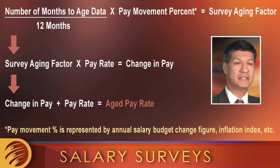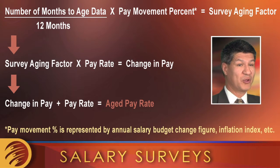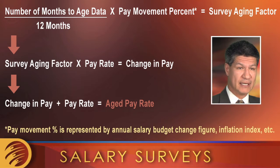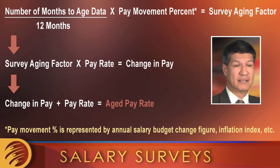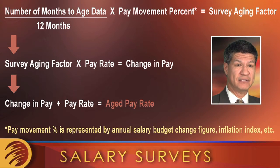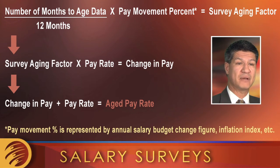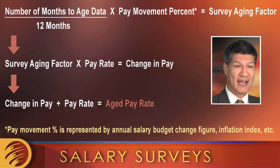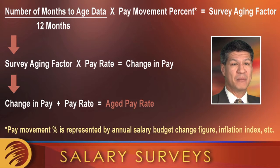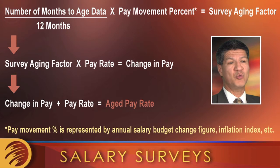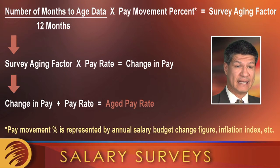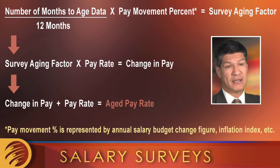That is a problem — it's just the nature of the beast. So what we do as compensation professionals is a simple technique called aging the data, where we determine based on other surveys — World at Work's salary budget survey being one good source — how fast the market is moving in general. Is that two percent? Is that three percent? We take that aging factor and apply it to forward the past data to today's date, making it current. It's not absolutely accurate or infallible, but it's a reasonable way to use survey data effectively within those periods.